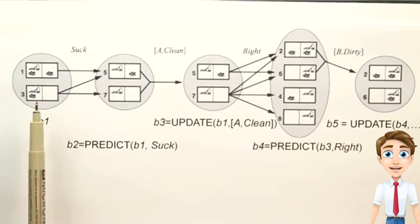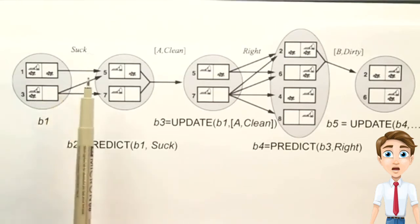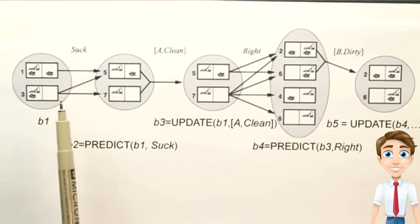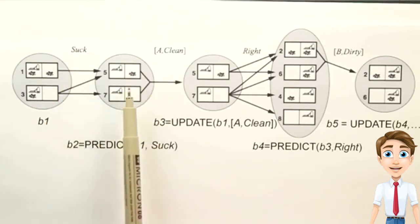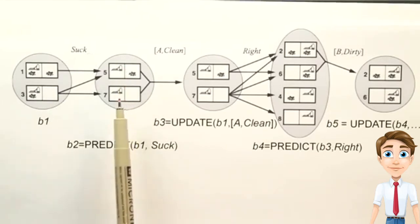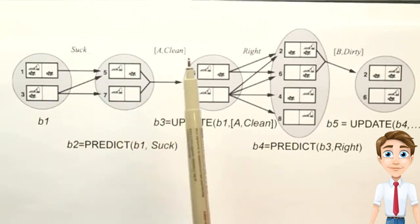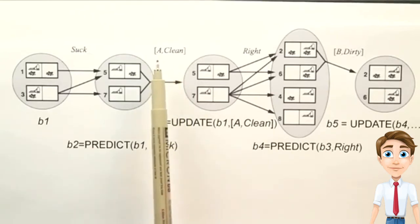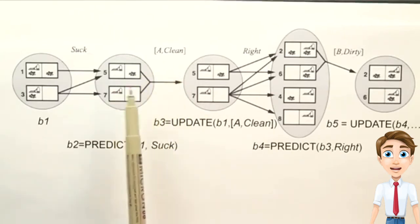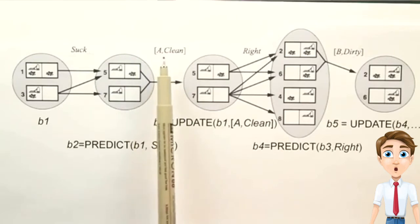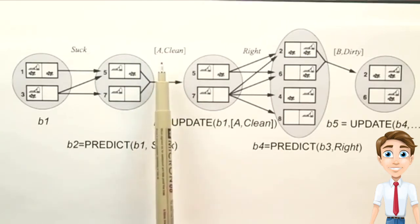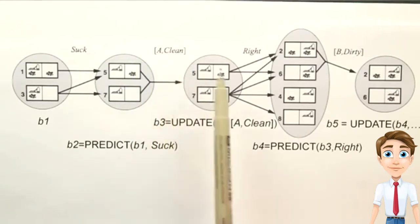So if we start off in this state and execute the suck action, we can predict that we'll end up in one of these two states. And then we have an observation. Well, we know what that observation is going to be, because we know the suck action always worked, and we know we were in A. So the only observation we can get is that we're in A and that it's clean. We end up in that same belief state.